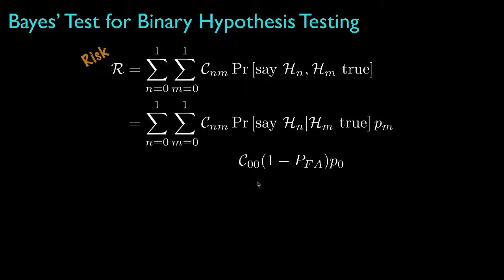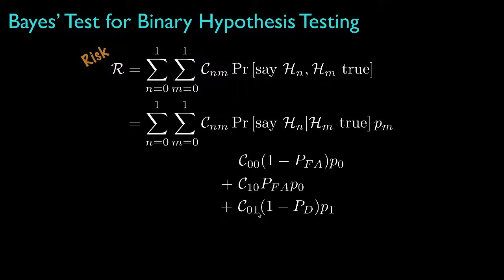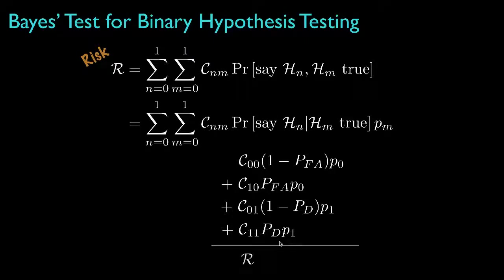When H0 is true and we choose H0, the conditional probability is 1 minus the false alarm probability, and the prior is P0. When H0 is true and we choose H1, the conditional probability is the false alarm probability, and the prior is P0. When H1 is true and we choose H0, the conditional probability is 1 minus the detection probability, and the prior is P1. And finally, when H1 is true and we choose H1, the conditional probability is the detection probability, and the prior is P1. The sum of all of these terms will be the risk, and that's the thing we want to minimize.